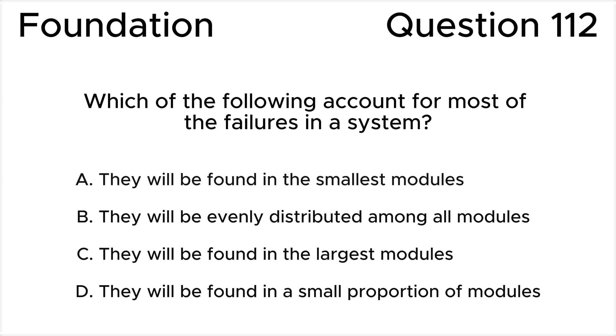ISTQB foundation level question 112: Which of the following account for most of the failures in a system? A: They will be found in the smallest modules. B: They will be evenly distributed among all modules. C: They will be found in the largest modules. D: They will be found in a small proportion of modules.